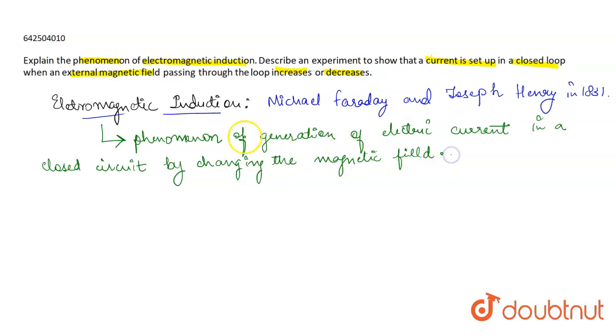The electric current that will be produced in this phenomena will be called induced current, and the potential difference that will be set in the circuit due to this induced current will be called induced EMF.